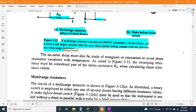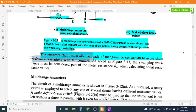The ammeter shunt must also be made of manganin or constantan to avoid shunt resistance variations with temperature. As noted in Figure 3-11, the swamping resistance must be considered part of the meter resistance R_M when calculating shunt resistance values.